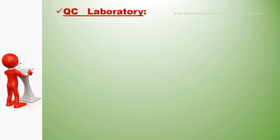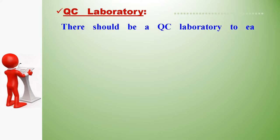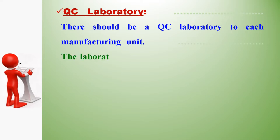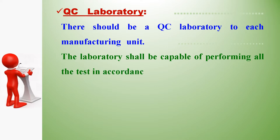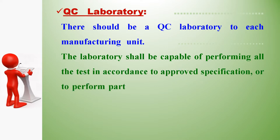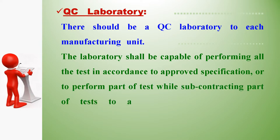There should be a QC laboratory for each manufacturing unit. The laboratory shall be capable of performing all tests in accordance with approved specifications, or perform part of the tests while subcontracting remaining tests to an approved contract laboratory. QC laboratories shall be separated from production areas, especially for the microbiology lab.